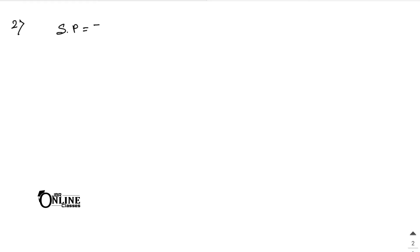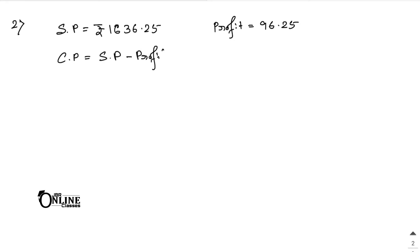Next problem: by selling an article for rupees 1636.25, so SP equals 1636.25, a dealer gains a profit of 96.25. Find his gain percentage. To find the gain percentage, first find the CP. CP equals SP minus profit: 1636.25 minus 96.25, which equals 1540.